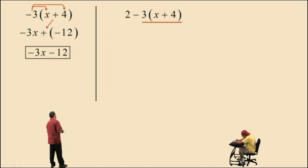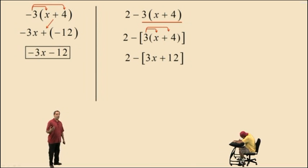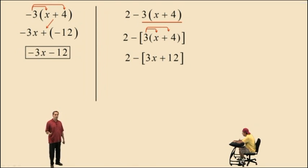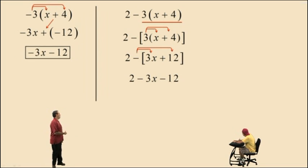Let's do the multiplication first. We have 2 subtract, and now let's use brackets to isolate our product. Applying the distributive property: 3 times x is 3x and 3 times 4 is positive 12, so we have 3x plus 12 in the brackets. But we have a subtraction outside of that bracket — brackets are just like parentheses. We can treat it as a negative 1: negative 1 times 3x is negative 3x, and negative 1 times 12 is negative 12. So we're really saying 2 plus a negative 3x plus a negative 12, and that's how we get this answer.